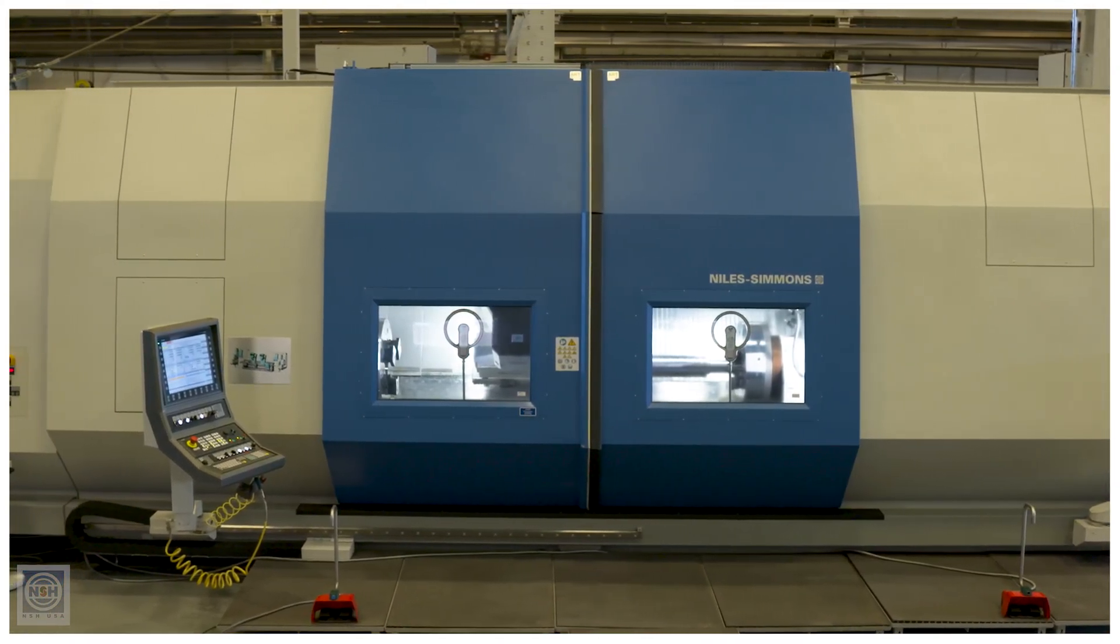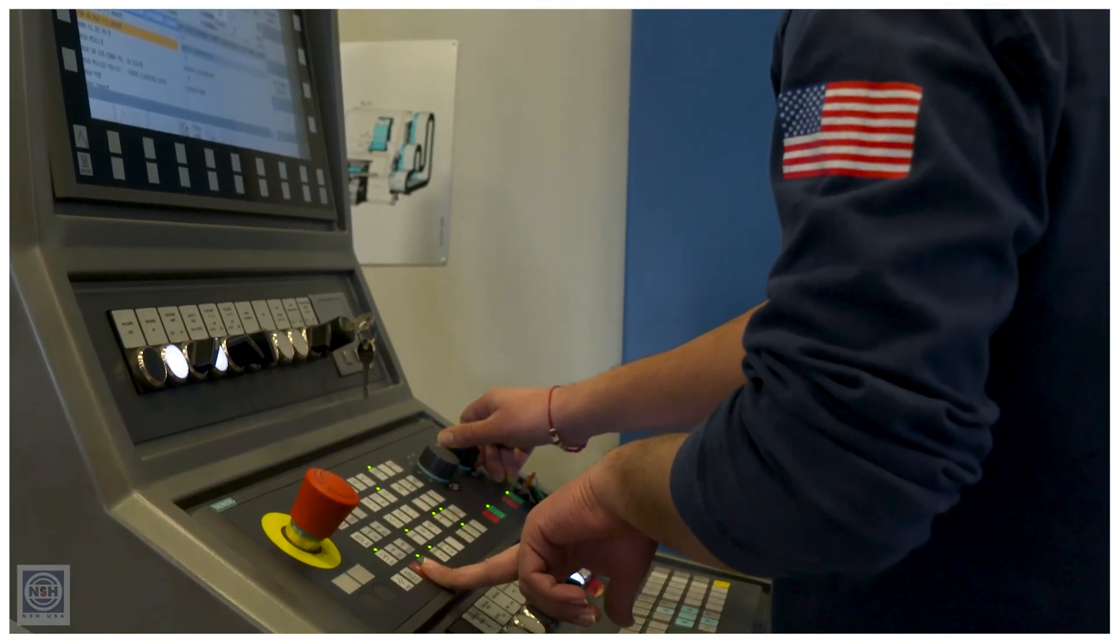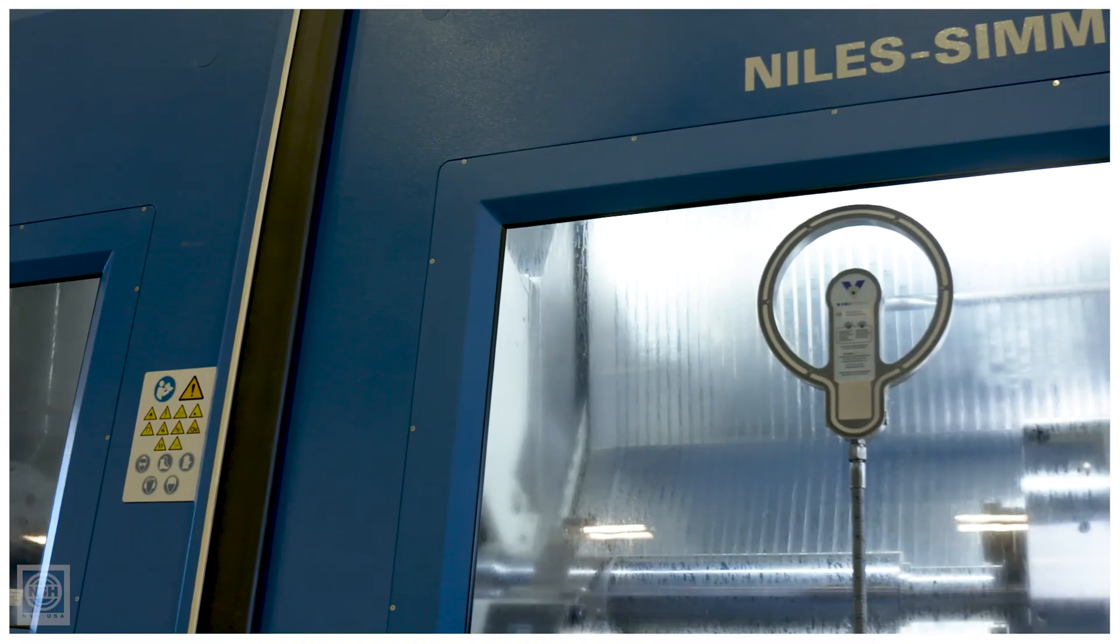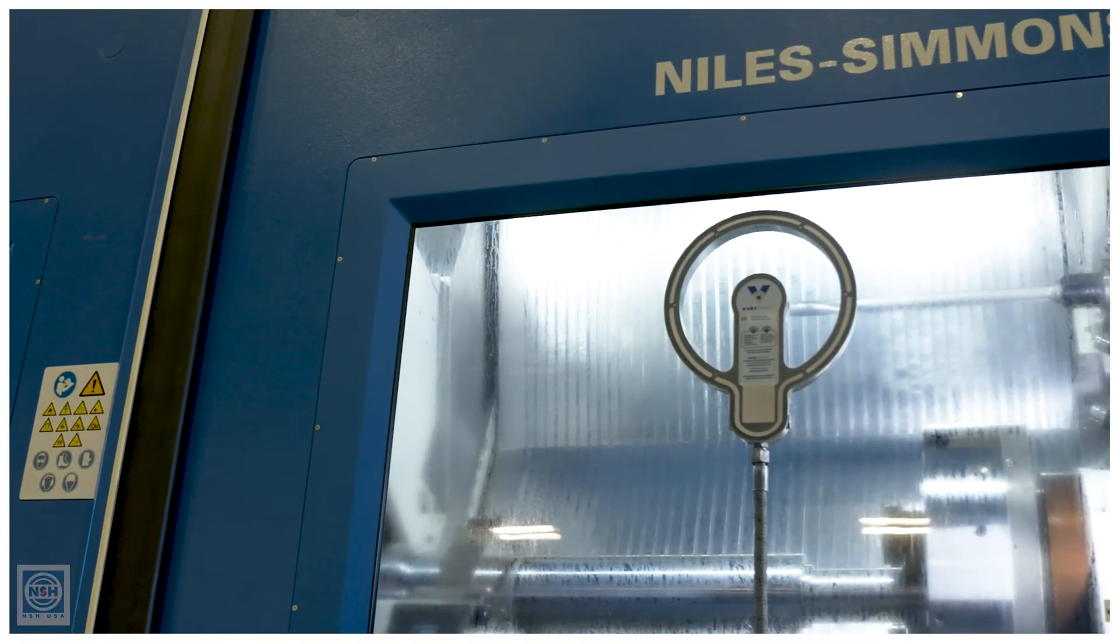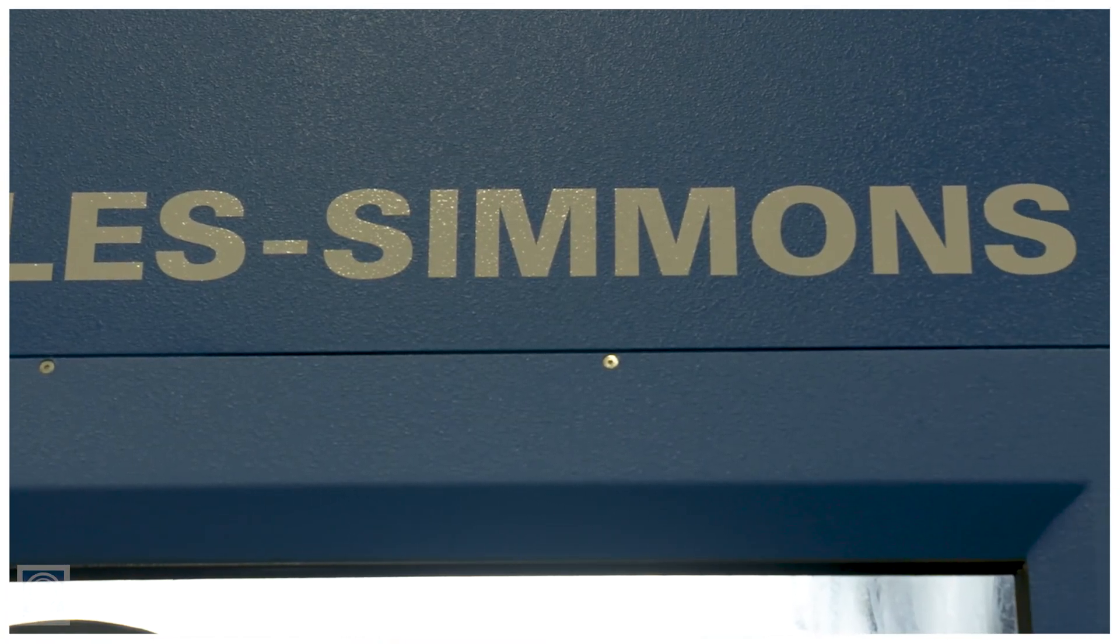We can work with robot gripper arms, we can work with overhead gantries, we can automate the infeed and the outfeed. The Niles Simmons machines are customized to your process here at NSH USA.